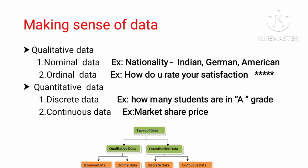Ordinal data involves rating or ranked numbers. Quantitative data is categorized into two types: discrete data and continuous data. Discrete data has values that change in distinct steps.